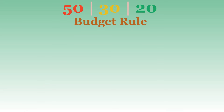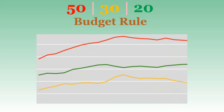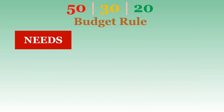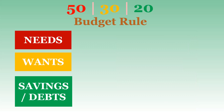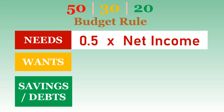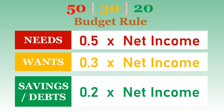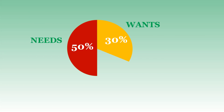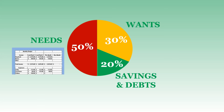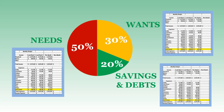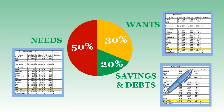With the 50-30-20 budget rule, you must calculate the maximum spending threshold for each of the three categories — needs, wants, and savings and debts — by multiplying your take-home pay by 0.5 for needs, 0.3 for wants, and 0.2 for savings and debts, to see how much you should spend in each category. Plan your budget around these numbers, then list your monthly expenses under each category to see if you're spending less than the monthly targets you established. Track your expenses each month and make changes if necessary in order to stick to your spending thresholds going forward.